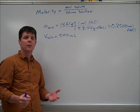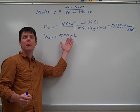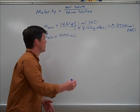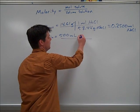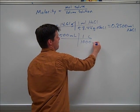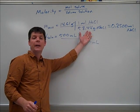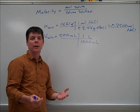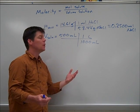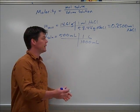Next we'll take the total volume of the solution, 500 milliliters, and convert this to liters. Using the conversion factor that one liter equals 1,000 milliliters, we calculate a total volume of 0.5 liters.